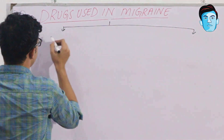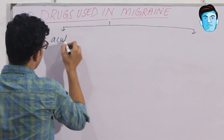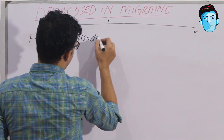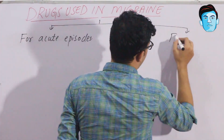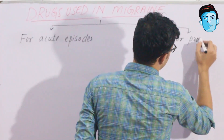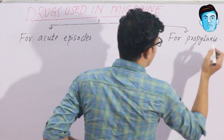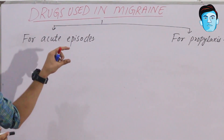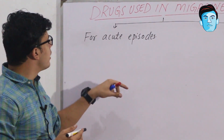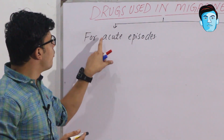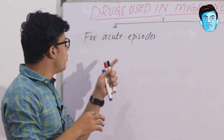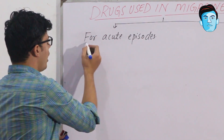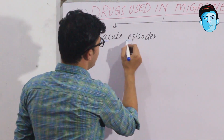The classification covers two main categories: for acute episodes and for prophylaxis. There are certain classes of drugs coming under the category for acute episodes. In this, we will be more focusing upon the initial letters F, A, and E, which correspond to particular classes of migraine drugs.